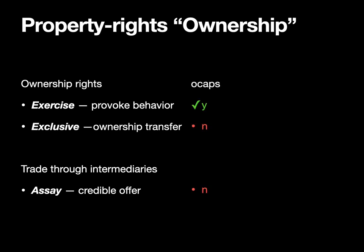The object capability approach only gives us one of these three properties directly. By having a capability to an object, you can invoke the object and provoke whatever behavior it is. You can think of an object capability exactly as the permission to provoke the behavior of the object it designates.